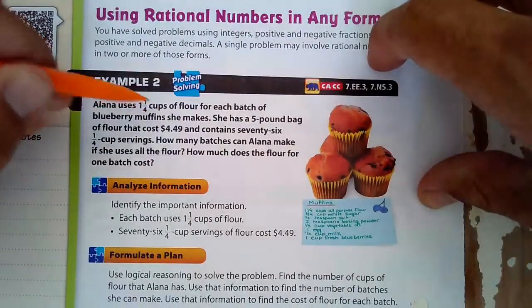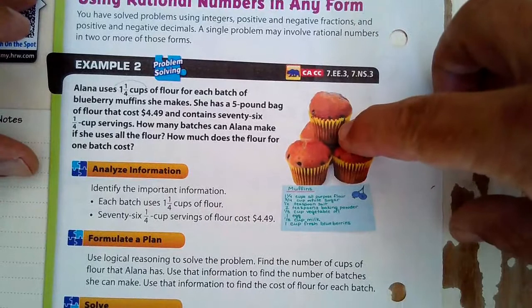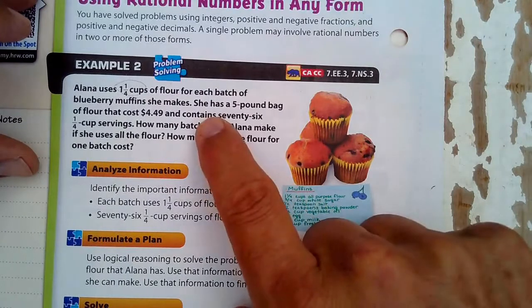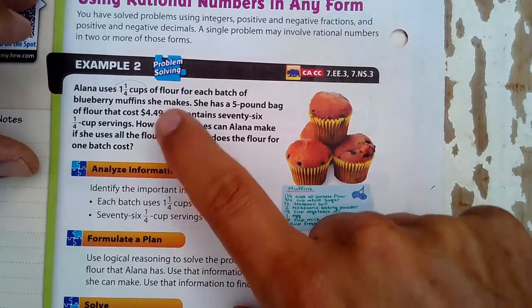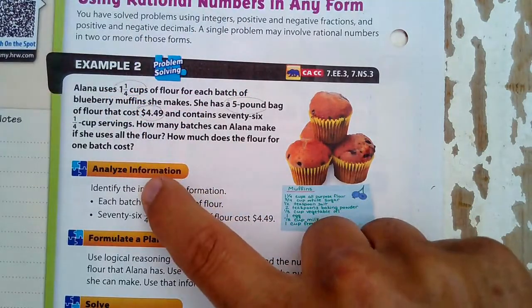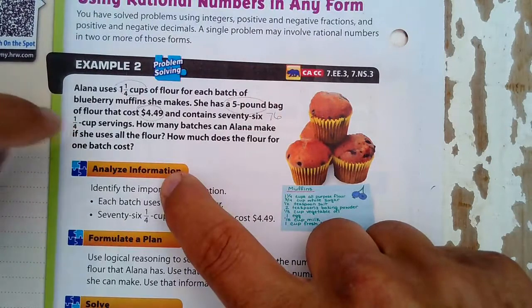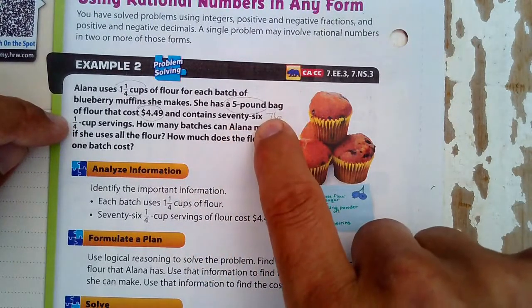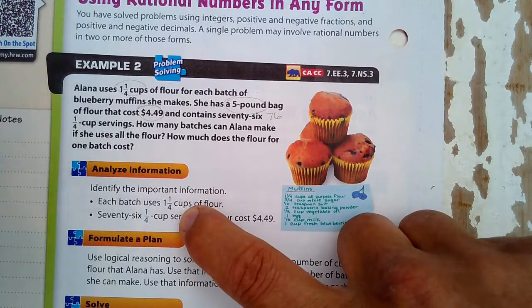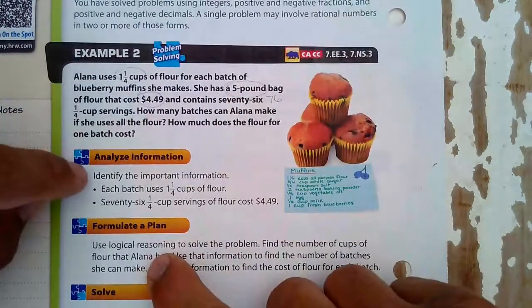Alana uses 1 and 1/4 cup of flour for each batch of blueberry muffins. She has a five pound bag of flour that costs $4.49 and contains 76 one-fourth cup servings. So she can get 76 servings out of that five pound bag. How many batches can Alana make if she uses all the flour? And then how much does the flour of one batch cost?